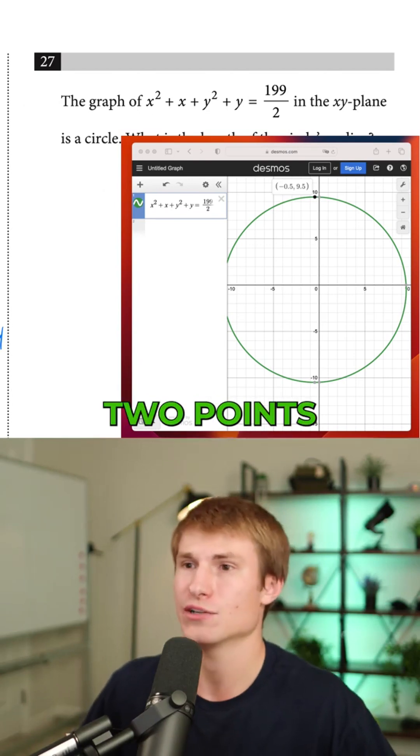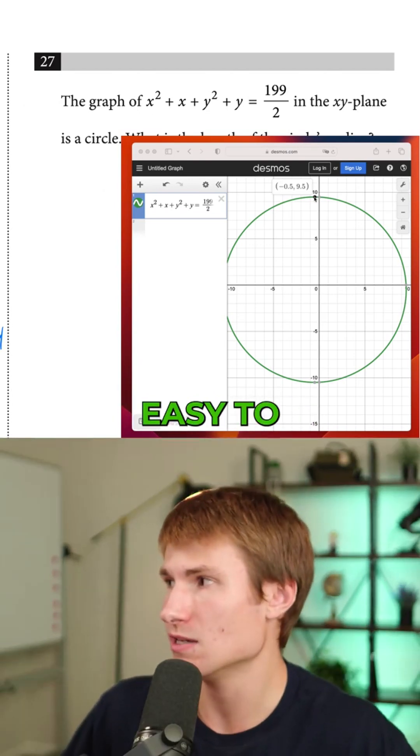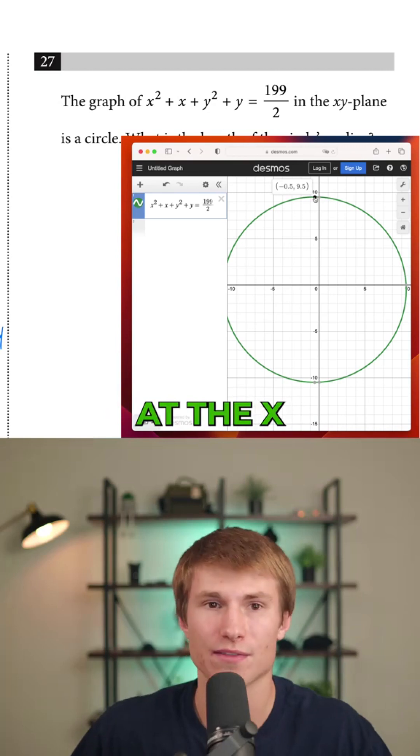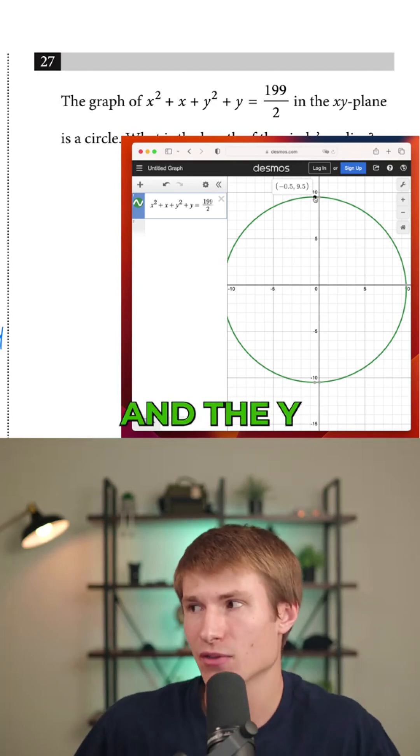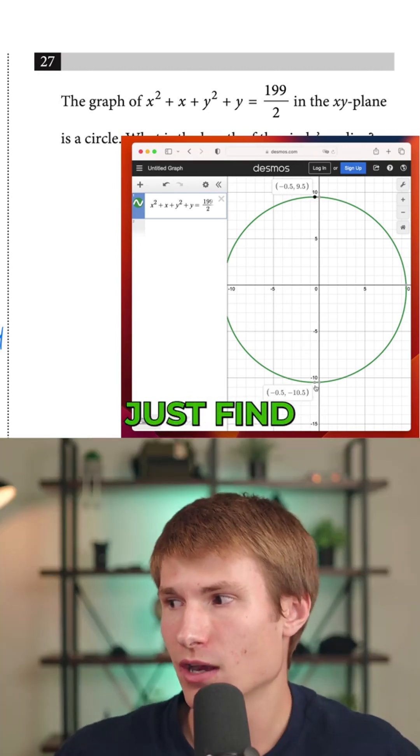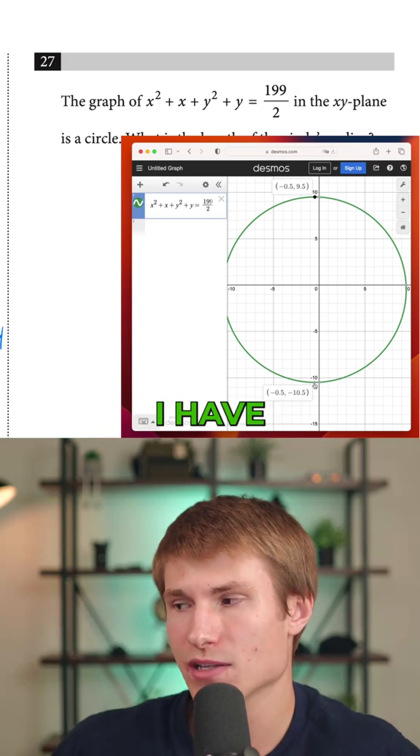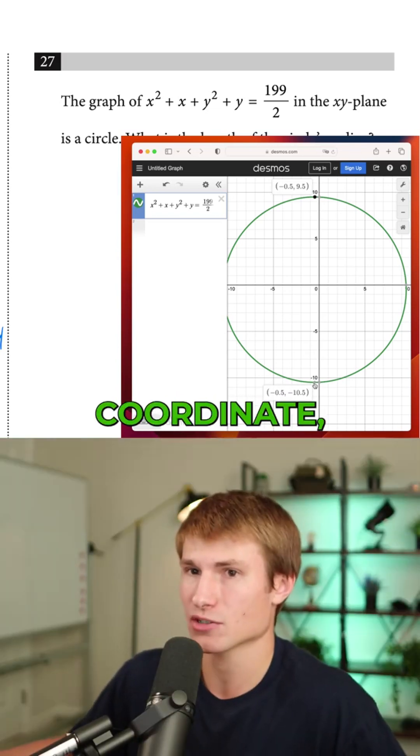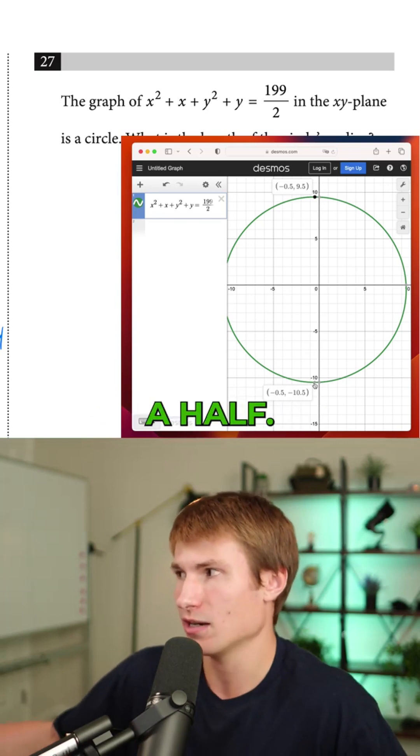I would first find two points that are really easy to calculate. I see one here at x-coordinate -0.5 and y-coordinate 9.5. Then I find the opposite coordinate by going straight down. I have -0.5, the same x-coordinate, and my y-coordinate is -10.5.